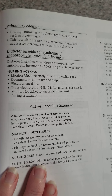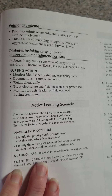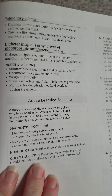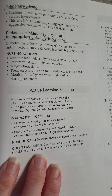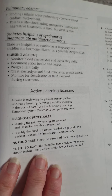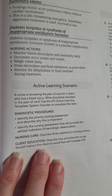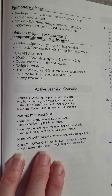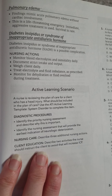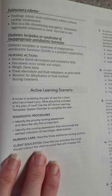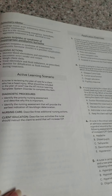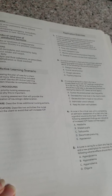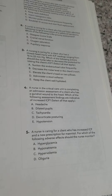This is not type 1 diabetes; it's the third type. Nursing actions: monitor blood electrolytes and osmolarity daily, document strict intake and output, weigh client daily, and treat electrolyte and fluid imbalance as prescribed. Monitor for dehydration or fluid overload during treatment. This completes chapter 14, ATI. Finish with the active learning scenario application exercises for study.